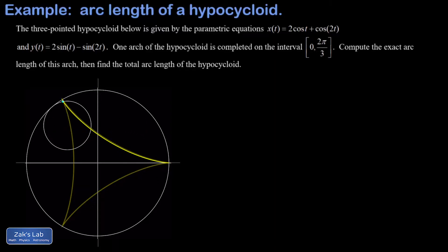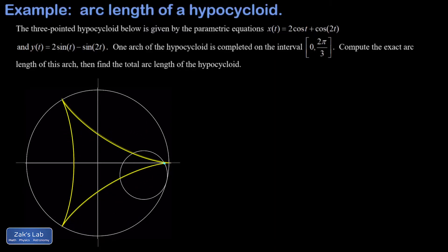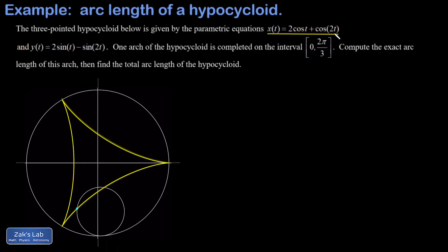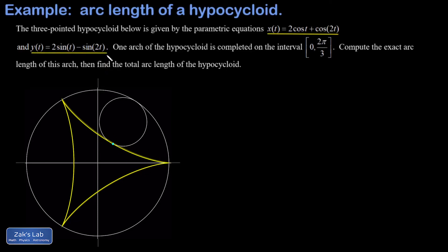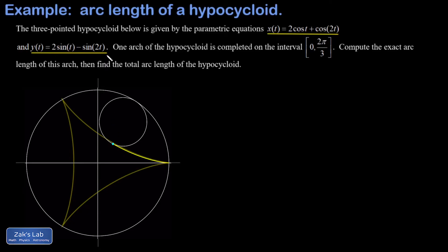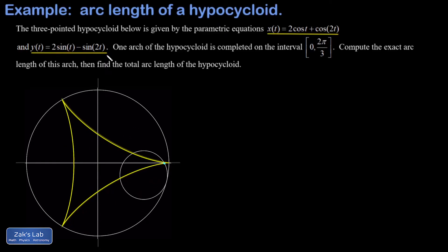In this video we're computing the arc length of a three-pointed hypocycloid. This hypocycloid is given by the parametric equations x(t) = 2cos(t) + cos(2t) and y(t) = 2sin(t) − sin(2t). This curve is produced by a circle of radius 1 rolling within a circle of radius 3. I'll post a link to the video where I originally derived the parametric equations for hypocycloids.